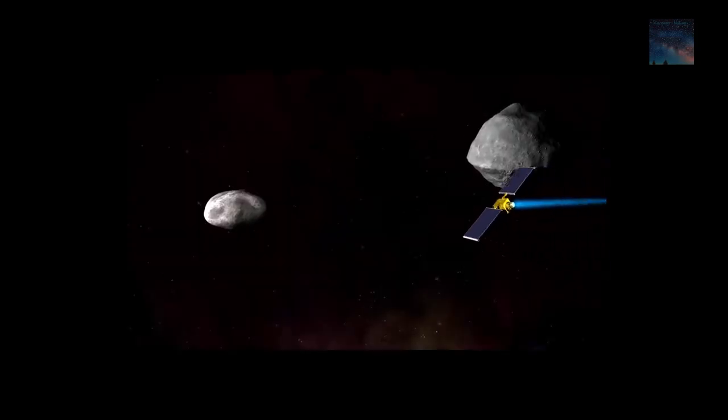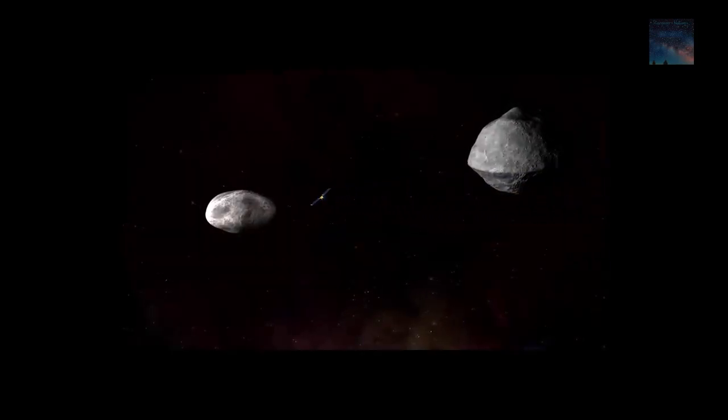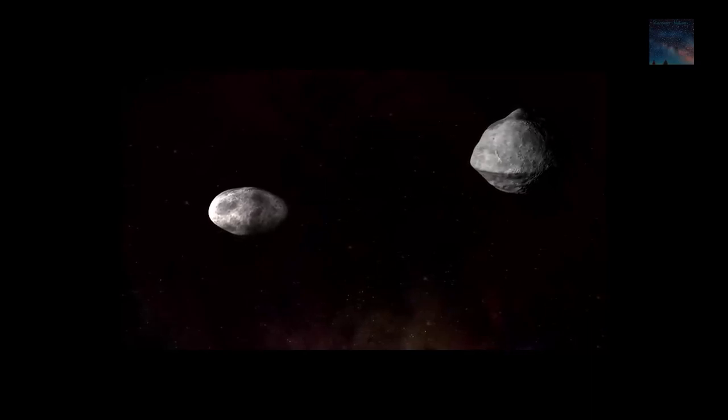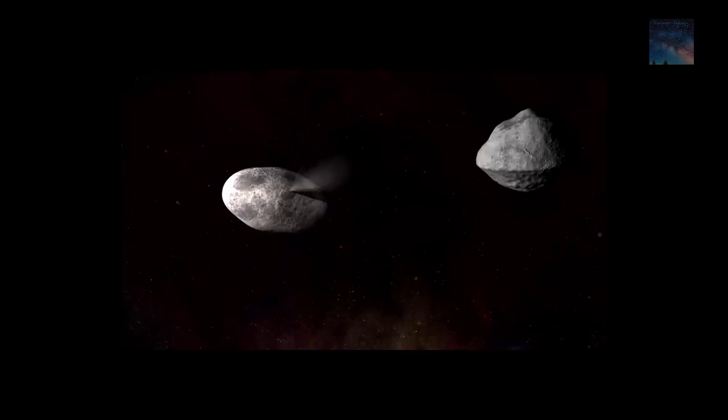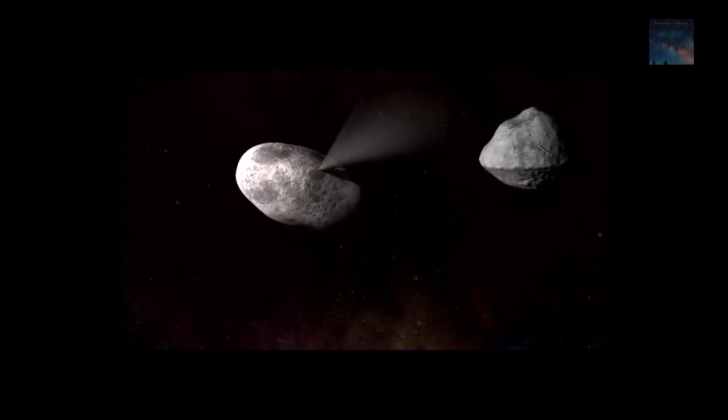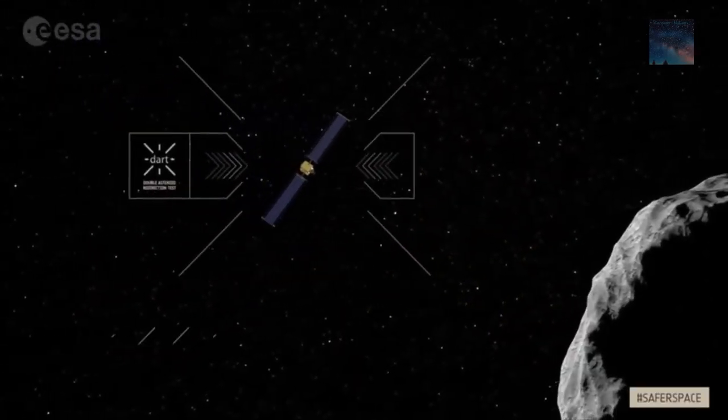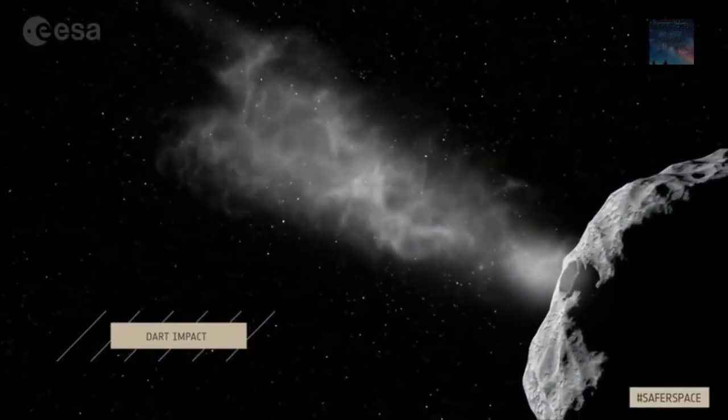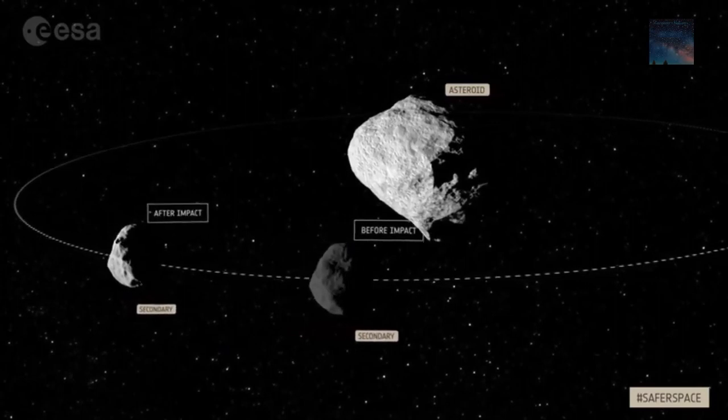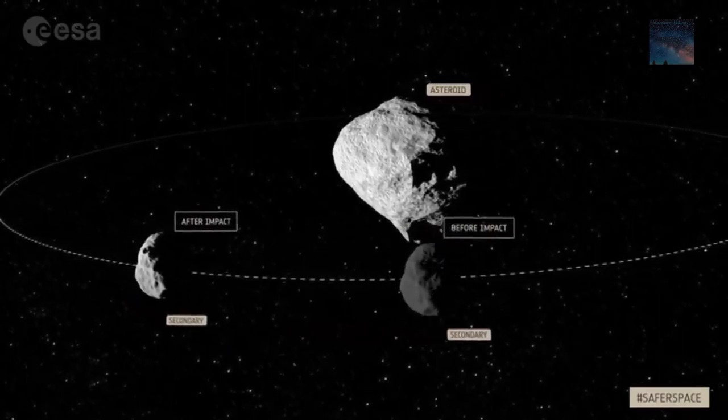The Hera spacecraft mission, proposed by the European Space Agency, is heading to a binary asteroid to support NASA's planetary defense plan against potential asteroid collisions. NASA's Double Asteroid Redirection Test, or DART mission, is scheduled to ram a binary asteroid in October 2022 and again in 2024.